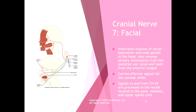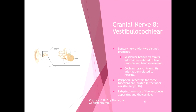Cranial nerve seven is the facial nerve. It innervates many of the facial muscles for facial expression and most of the glands in the head. It also conveys sensory information from the posterior canal and taste from the anterior tongue. It carries efferent signals for the corneal reflex, and signals to and from cranial nerve seven are processed in nuclei located in the pons, medulla, and upper spinal cord.